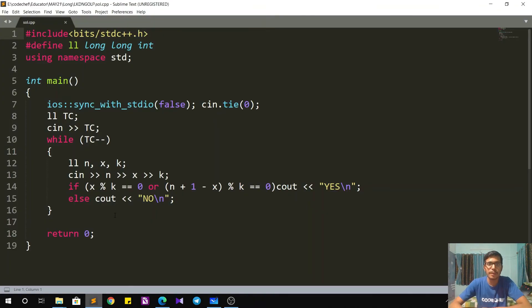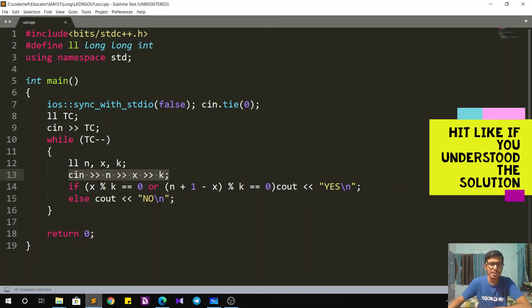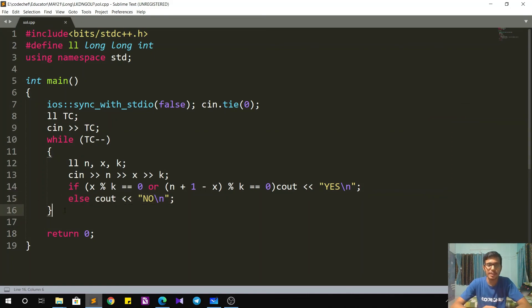In the C++ implementation we start by taking the input for n, x and k as instructed. Then we check whether x is a multiple of k, that is for forward journey. And for the backward journey we check whether n plus 1 minus x is a multiple of k. If any of this is true, then our answer is yes, or else our answer is no. So the code is pretty simple. I hope everyone understood it.